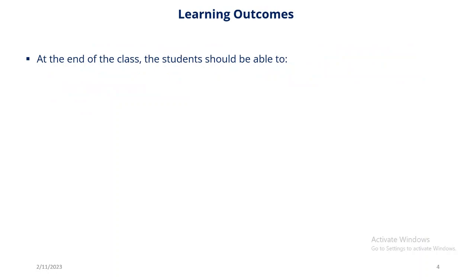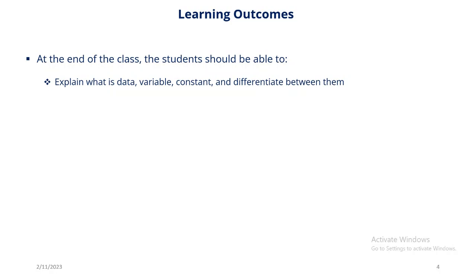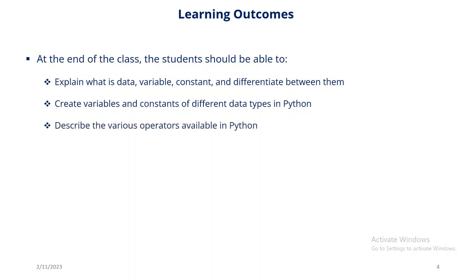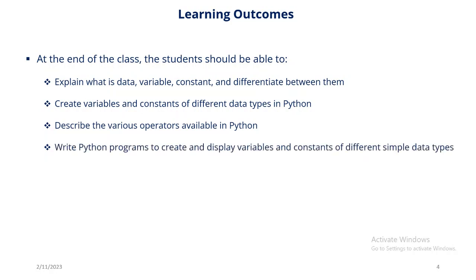At the end of this class, participants should be able to explain what data is, what a variable is, what a constant is, and be able to differentiate between them. You should be able to create variables and constants of different data types in Python, and describe the various operators available. You should also be able to write Python programs to create and display variables and constants of different simple data types.